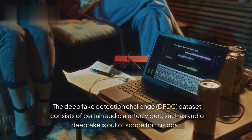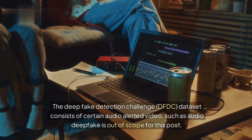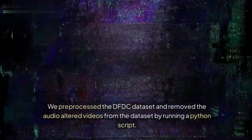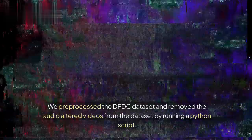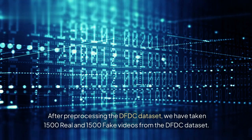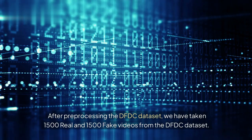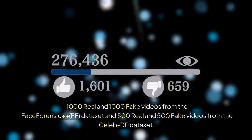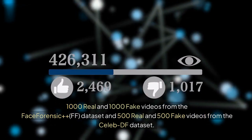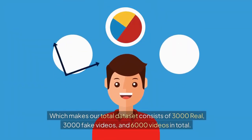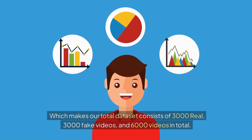The DFDC dataset contains certain audio-altered videos; since audio deepfake detection is out of scope for this work, we pre-processed the DFDC dataset and removed the audio-altered videos by running a Python script. After pre-processing, we took 1,500 real and 1,500 fake videos from DFDC, 1,000 real and 1,000 fake from FaceForensics++, and 500 real and 500 fake from CelebDF, making our total dataset 3,000 real, 3,000 fake, and 6,000 videos in total.